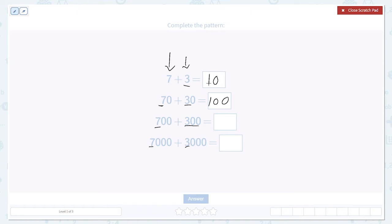700 plus 300 is 1000. Again, as we go from 100 to 1000, all we do is add a zero, shifting the whole thing one place to the left.